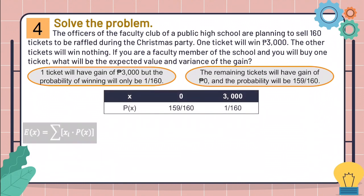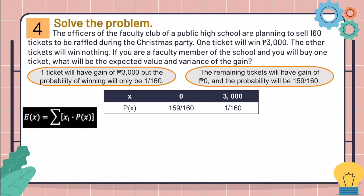Now, let's get the expected value using this formula. So, 0 times 159 over 160 plus 3,000 times 1 over 160, the answer is 18.75.